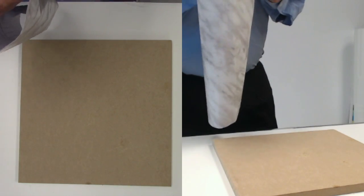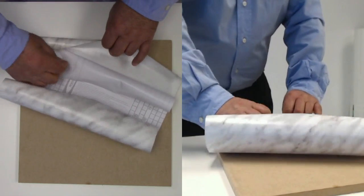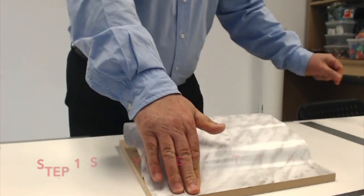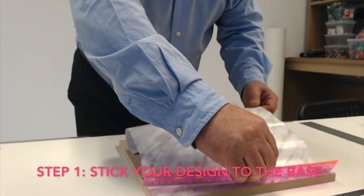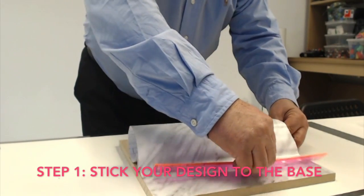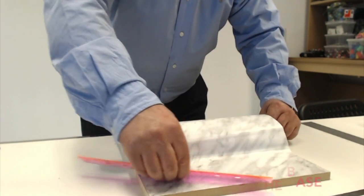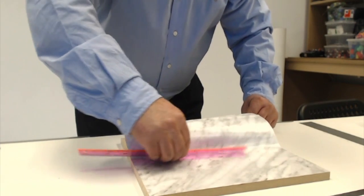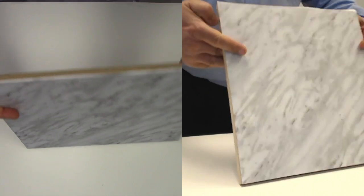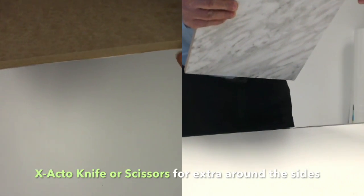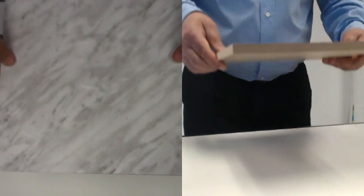So you just peel it off from one end. I sometimes will use a ruler and just go over the board as I peel it off. This way you want to make sure that it's nice. In case you have a little extra, I will just use an exacto knife or scissors to cut it to make it perfect.